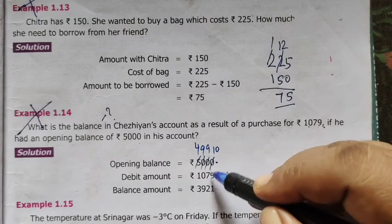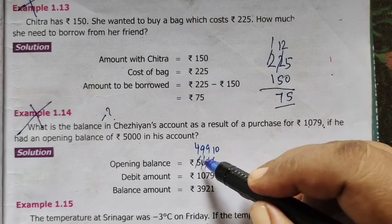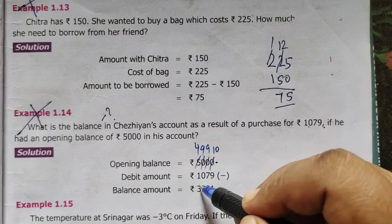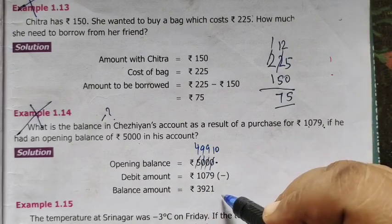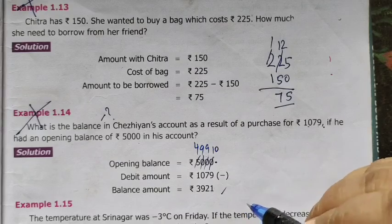9 minus 7 is 2. 9 minus 0 is 9. Then, this is 4 only. 4 minus 1 is 3. So this is 3,921 as balance amount.